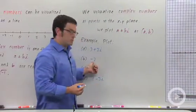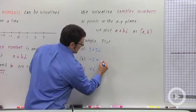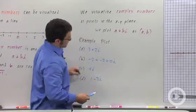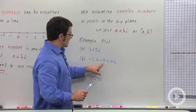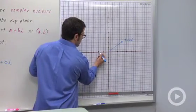Negative 2. Negative 2 is a complex number, even though it's also a real number. It's negative 2 plus 0i. So the imaginary part of this number is 0. Let's plot this. Negative 2 plus 0i is negative 2, 0, right here.